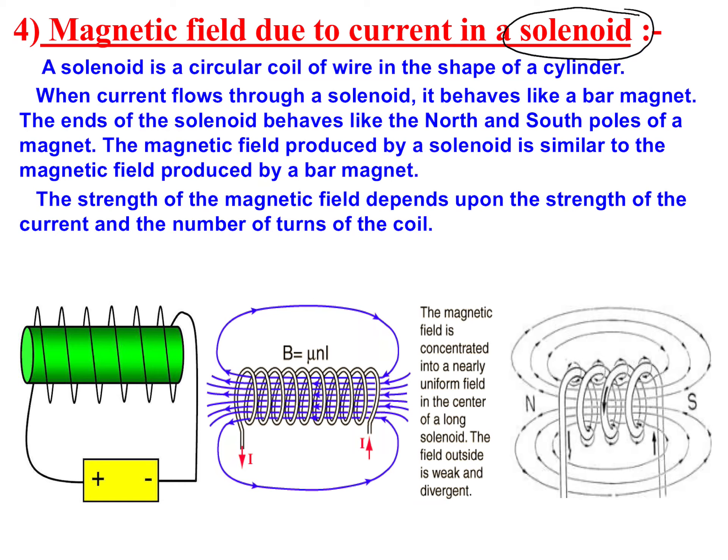Now we will study what happens when we have many loops of the previous kind. A solenoid is a circular coil of wire in the shape of a cylinder. If you bend wire in a cylindrical or helical shape, that arrangement will be known as a solenoid.